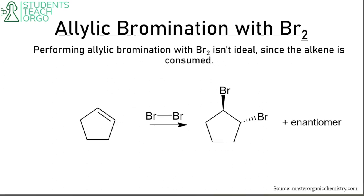Now let's talk about allylic bromination with Br2. When we have an alkene and we brominate with Br2, it's not ideal because we consume the alkene. So we can't really perform allylic bromination with simply Br2 — we get a dibromo product instead.